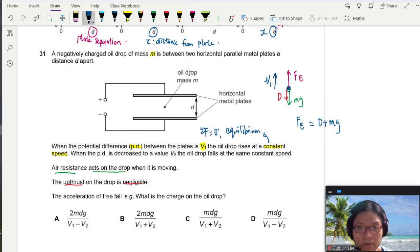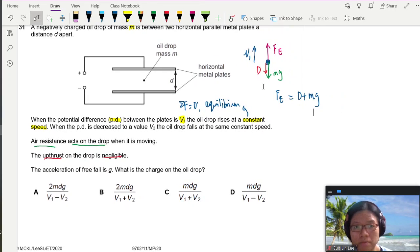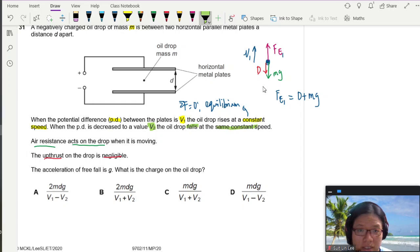And we know F is equal to QE. Okay? But I'm just going to call this Fe1 first because there's a second part of the question. It says that when the potential difference decrease to V2, the oil drop falls at the same constant speed. Meaning the drag force is the same, because drag force is dependent on the speed.